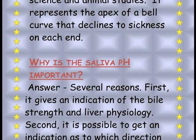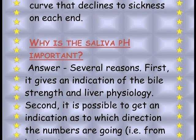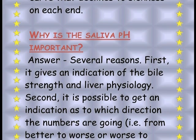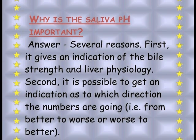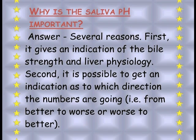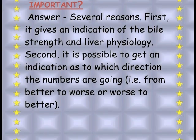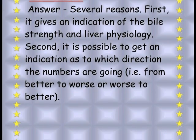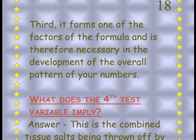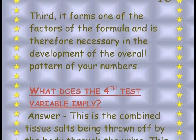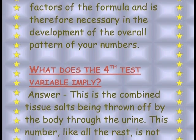Why is the saliva pH important? There are several reasons. First, it gives an indication of bile strength and liver physiology. Second, it is possible to get an indication of which direction the numbers are going — from better to worse or worse to better. Third, it forms one of the factors of the formula and is therefore necessary in the development of the overall pattern of your numbers.